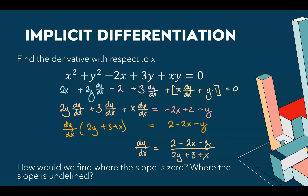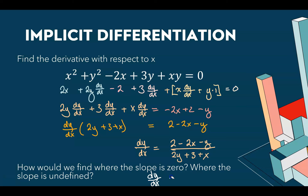To find where the slope is 0, set dy/dx equal to 0 — equivalently, set the numerator (2 − 2x − y) equal to 0, because the denominator multiplied by 0 gives zero. To find where the slope is undefined, set the denominator (2y + 3 + x) equal to 0, since that's where the derivative is undefined.